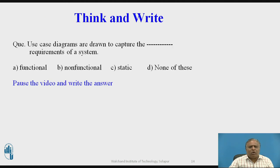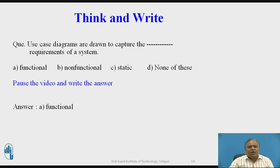Now I am going to ask a question to all the students — pause the video and write the answer. Use case diagrams are drawn to capture the blank requirements of a system. Option A: functional. Option B: non-functional. Option C: static. Option D: none of these. The correct answer is Option A: functional. Use case diagrams are drawn to capture the functional requirements of a system.